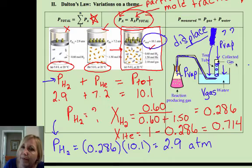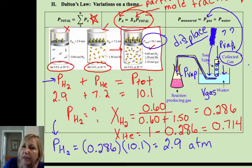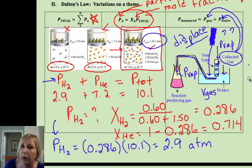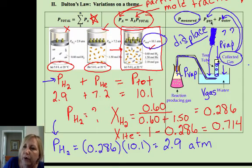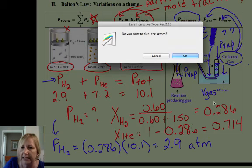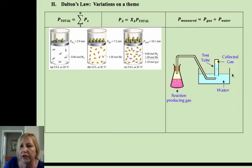So what happens is in this collected gas, we're going to have the pressure of our collected gas, but we're also going to have our vapor pressure of our water. So any way that we measure the pressure, we have our pressure of our gas and our pressure of our water. This is getting pretty messy, so let me clear the screen so we can focus in on this.